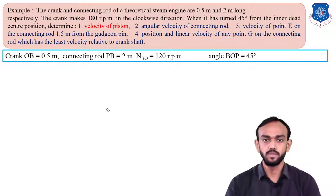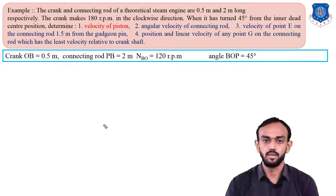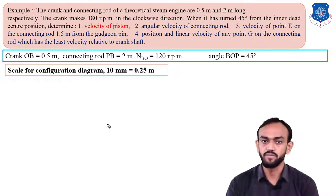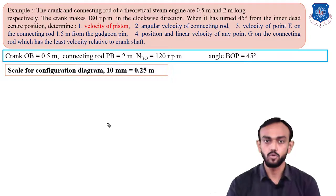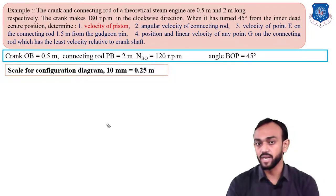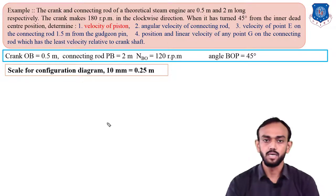As you can see, crank OB is 0.5 meter and connecting rod PB is 2 meter. For the space diagram, we need to choose the scale carefully because the largest dimension is 2 meter and the smallest is 0.5 meter — the crank will be very small. So let's take a scale where 10 mm equals 0.25 meter, meaning 1 centimeter equals 0.25 meter. With this scale, our crank will be approximately 2 centimeters and the connecting rod PB of 2 meters will be 8 centimeters.